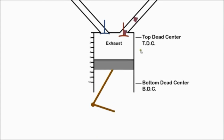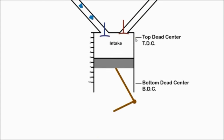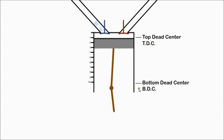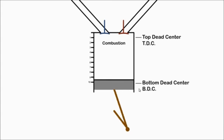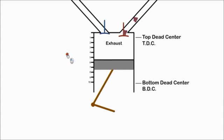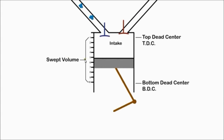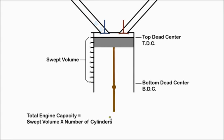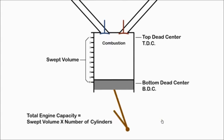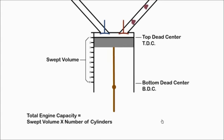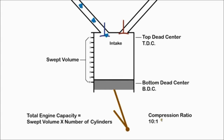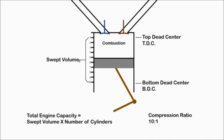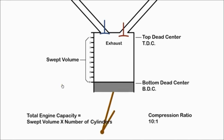The top position of the piston is called Top Dead Center (TDC), and the bottom position is called Bottom Dead Center (BDC). The volume between the two is called the swept volume. The total engine capacity is the swept volume multiplied by the number of cylinders. For this engine, the compression ratio is 10 to 1. A diesel engine would be higher, at perhaps 20 to 1.